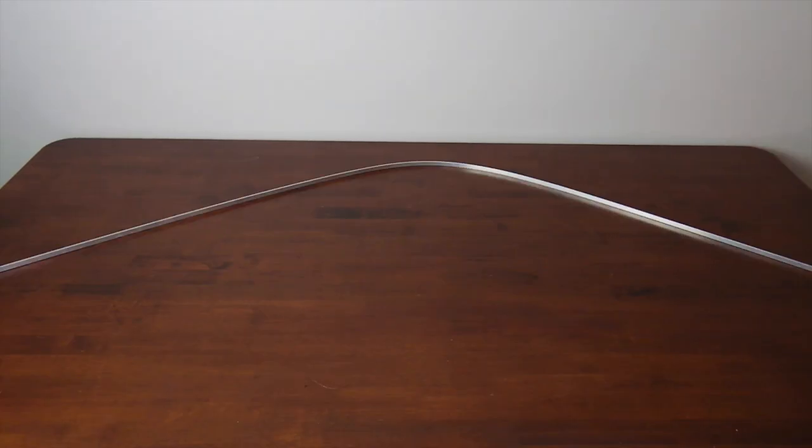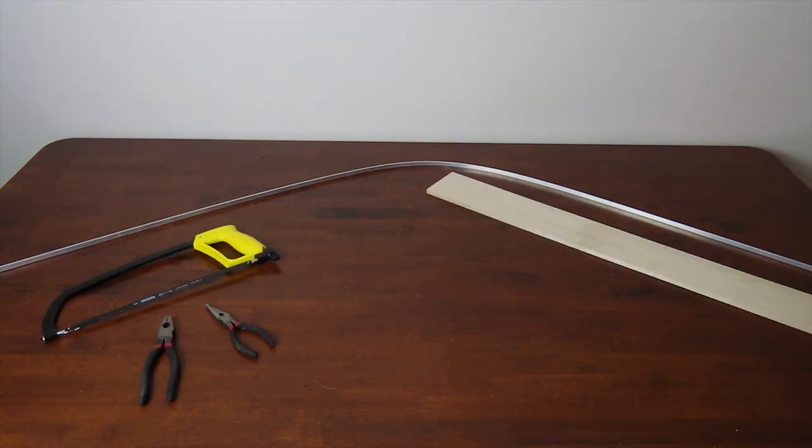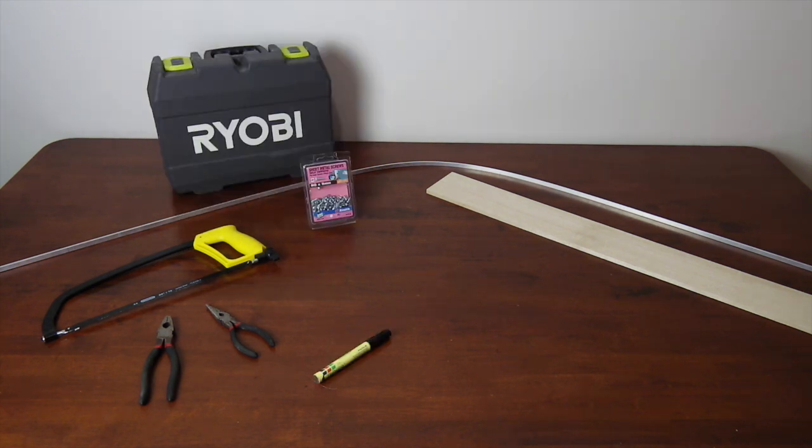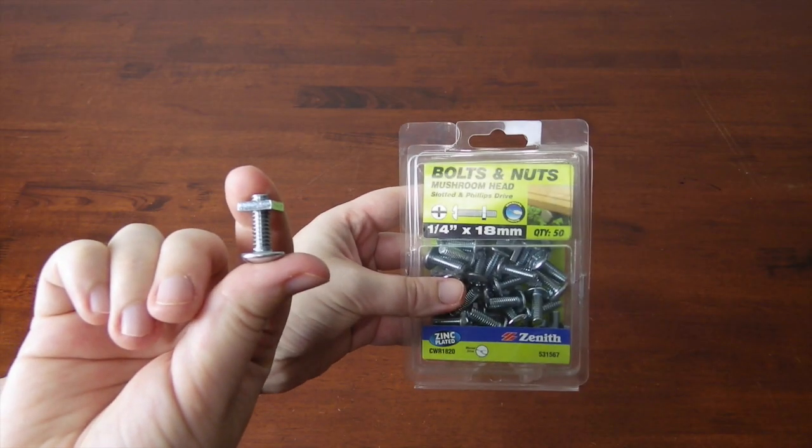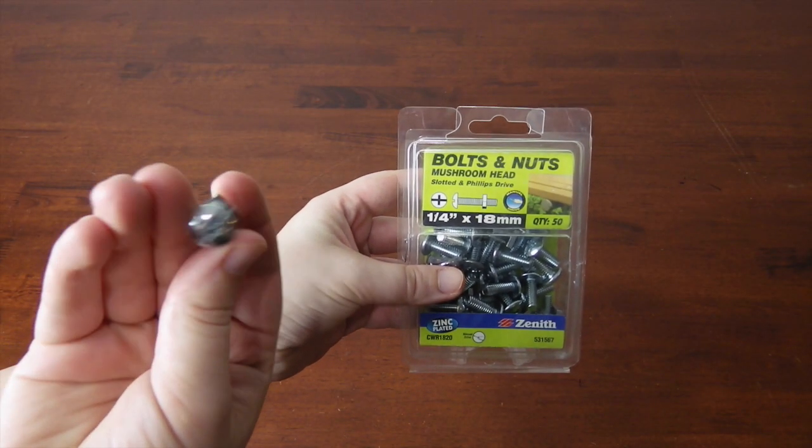What you'll need: aluminum strip—I used one centimeter wide with three millimeter thickness that came in a three meter length. A hacksaw, pliers, wood—I used a pine board which was nine centimeters wide with eight millimeter thickness. A marker, a dremel, screws—I actually swapped these out for some quarter inch by 18 millimeter bolts and nuts, and a screwdriver.